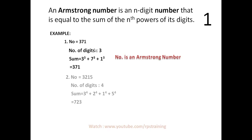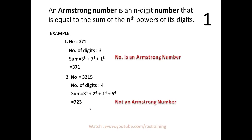Another example: suppose the number is 3215 and the number of digits is 4, so the sum will be 3 to the power 4 plus 2 to the power 4 plus 1 to the power 4 plus 5 to the power 4, and the result will be 723. These are not the same, so it is not an Armstrong number.